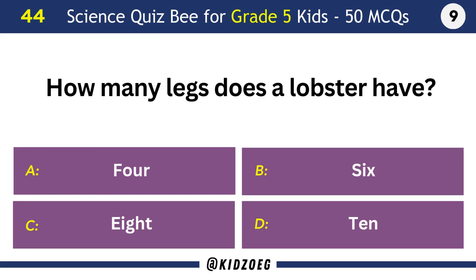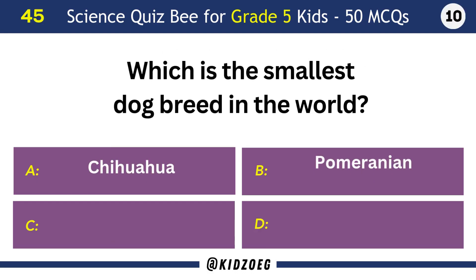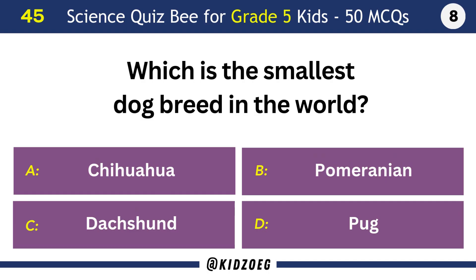How many legs does a lobster have? Ten. Which is the smallest dog breed in the world? Chihuahua.